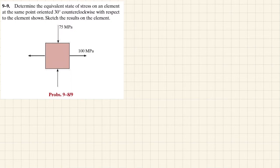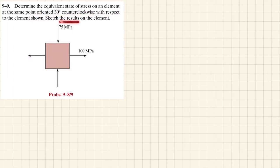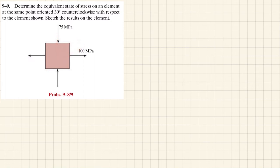Welcome back, problem 9.9. Determine the equivalent state of stress on an element at the same point oriented 30 degrees counterclockwise with respect to the element shown, and sketch the result on the element. In our previous problem 9.8 we rotated it clockwise; now we are given to rotate this element 30 degrees counterclockwise and find the transformed stresses.